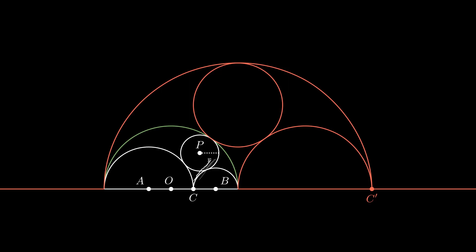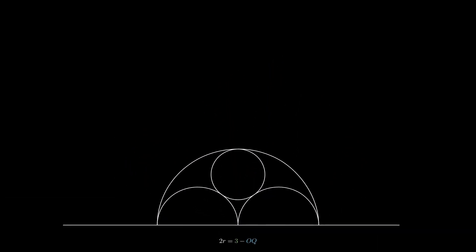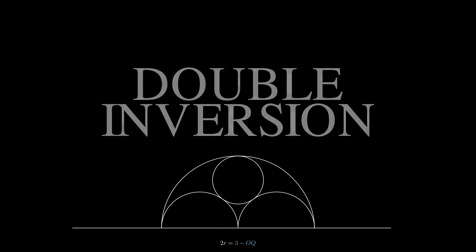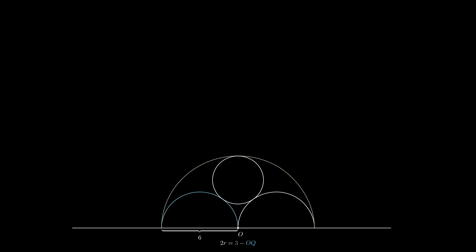The circle we're interested in is tangent to all three other circles and is therefore tangent to all three in the inverted space. Since we want to know the radius of this circle, we can say that twice that radius is equal to three minus the distance to this point Q. But how do we find that distance? Well, this is where the inversion comes in handy. Q inverts to this point Q dash, so we really just need to find the diameter of this red circle D. We choose the largest circle as the circle of inversion and invert these two semicircles, noting that they go through the origin and so become straight lines.